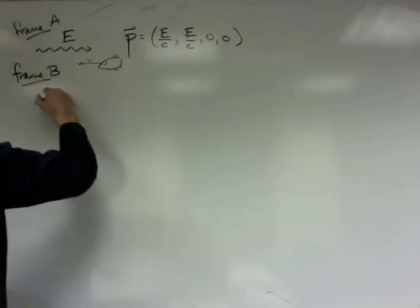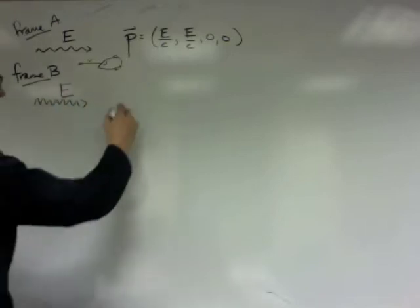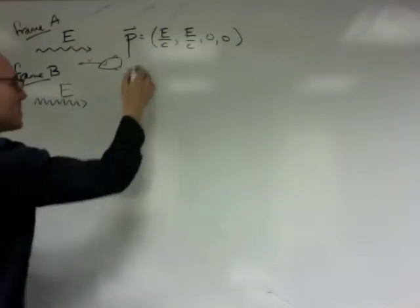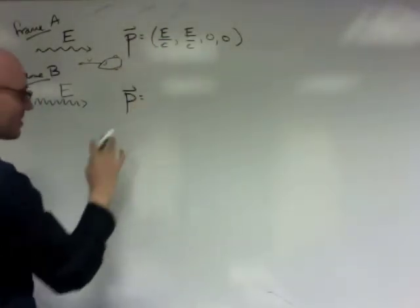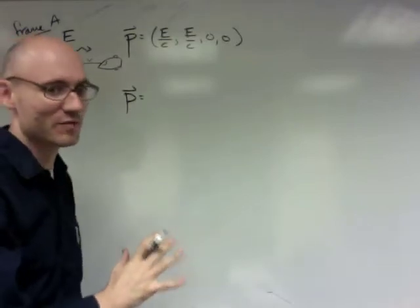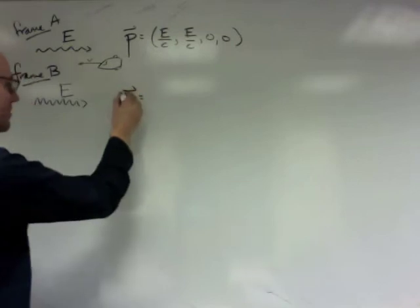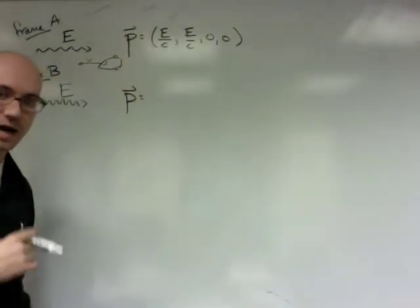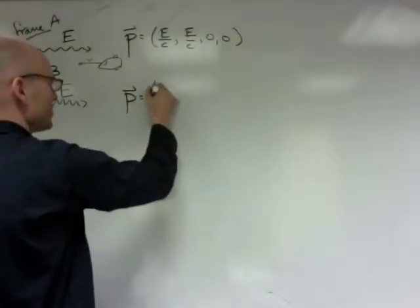So now this photon will have a different energy, and it will have a different four momentum. And this four momentum is going to be related to this four momentum. These four momentum components, it's actually the same four momentum. The four momentum is a frame-independent object, but it's going to have different components. The components of this four momentum will be related to the components of this four momentum by the Lorentz transformation. So let's do the Lorentz transformation.